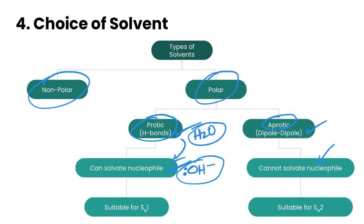Now SN2 reactions will favor aprotic polar solvents if you have neutral nucleophiles. They can't form hydrogen bonds with the nucleophile, and so that's really good. This is suitable if you have something like water as the nucleophile.